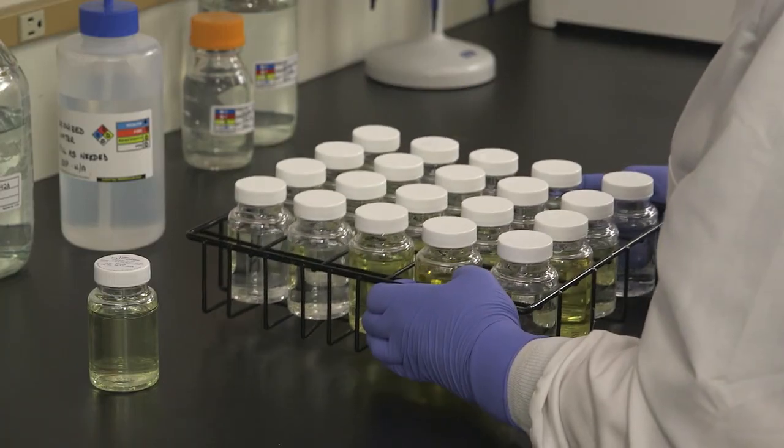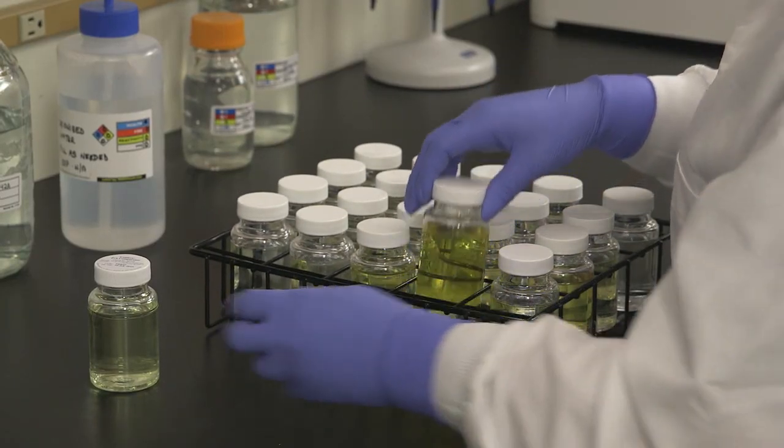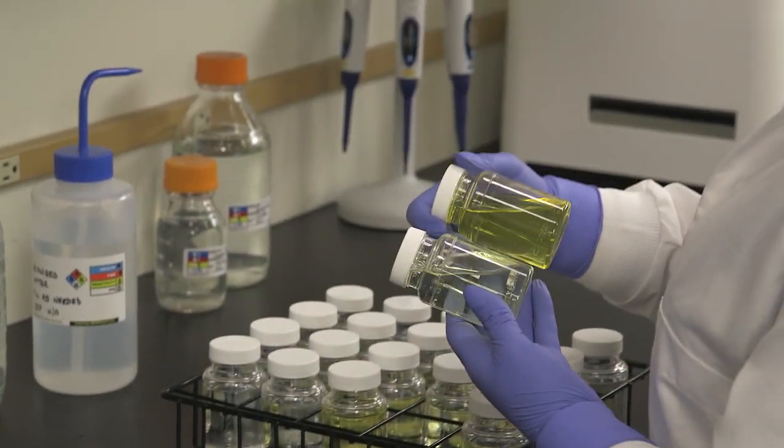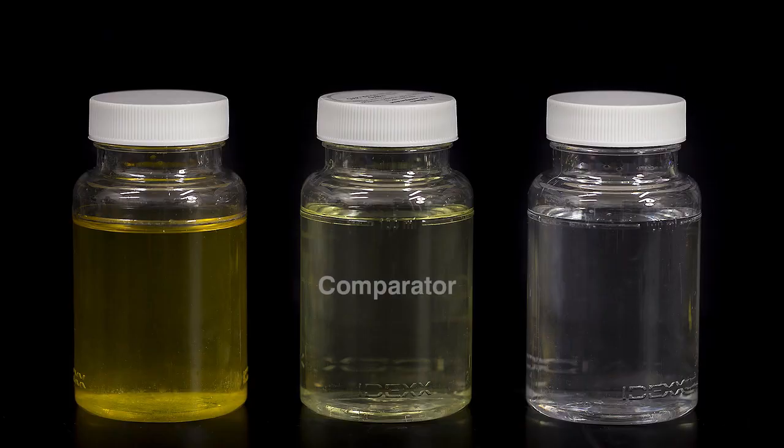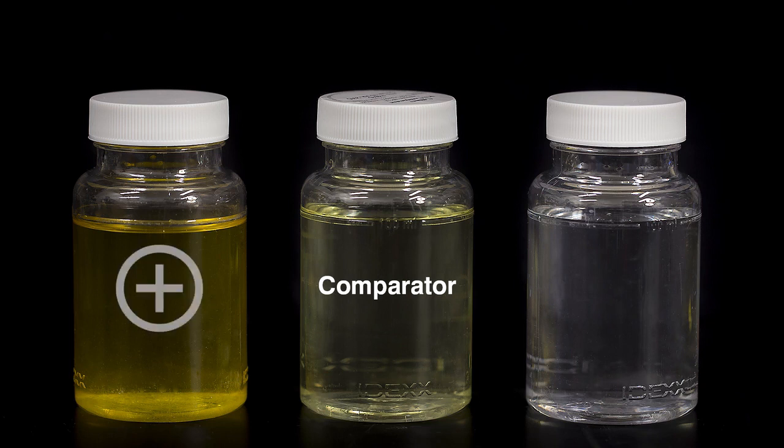After 24 hours, read the results by comparing the samples to the Coliform E. coli presence absence comparator. If the sample is yellow, equal to or greater than the comparator, the sample is positive for total coliforms. If the sample is less yellow than the comparator, the sample is negative for total coliforms and E. coli.